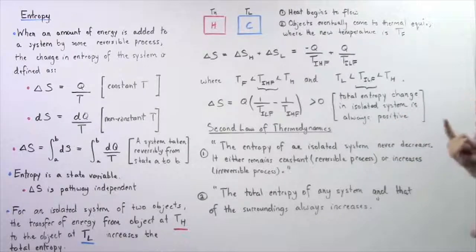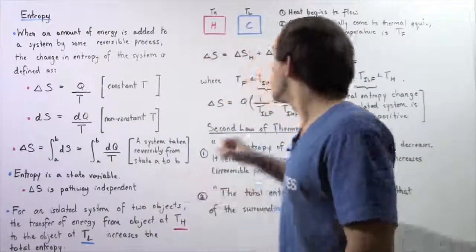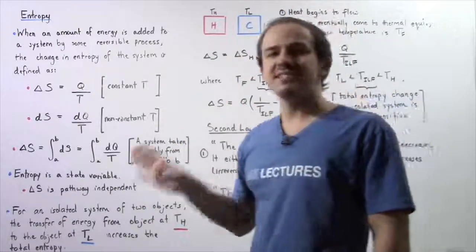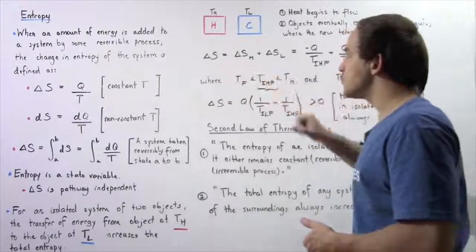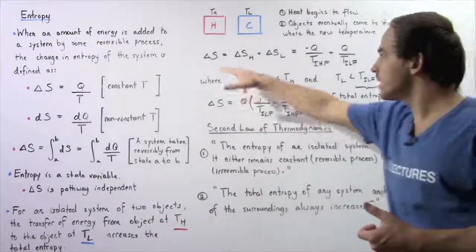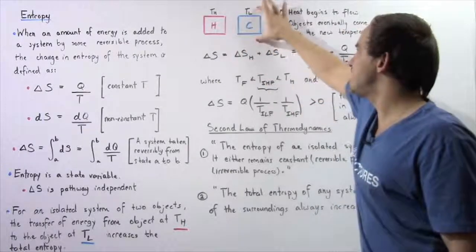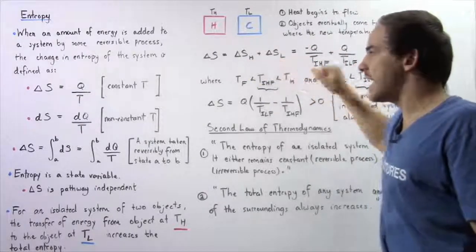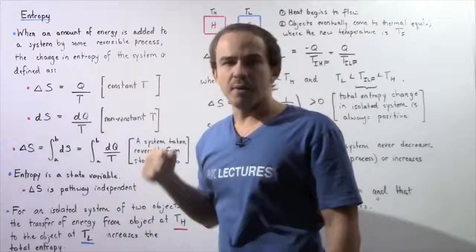The objects eventually come to thermal equilibrium, meaning the temperature will eventually equalize. This object will gain a certain amount of energy and this object will lose that same amount of energy. So let's represent the change in entropy of our isolated system consisting of these two objects. The change in entropy is equal to the change in entropy of this object plus the change in entropy of this object: ΔSH plus ΔSL. Going back to the formula, ΔS is equal to Q divided by T.